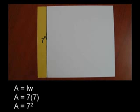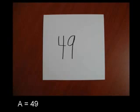Here is a square whose width is equal to 7 inches. We know, since it's a square, that its length is the same. Thus, its area is equal to 7 times 7, or 7 squared, which is equal to 49.